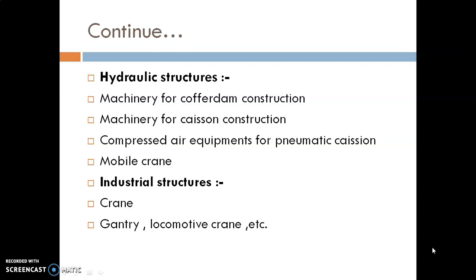For hydraulic structure construction such as barrages, siphons, and canal equipment, we use specialized machinery. For caisson construction, compressed air equipment is used for pneumatic caissons. Laborers work within the compressed air environment, so compressed air equipment is an important component. Mobile cranes are also required.